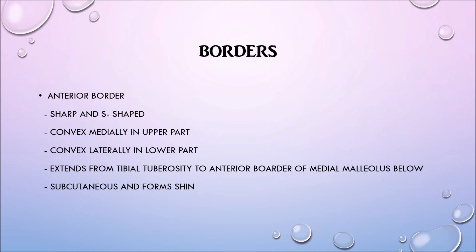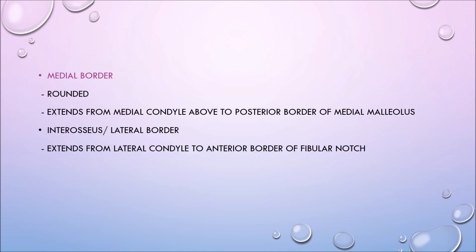Looking at the borders in detail: the anterior border is sharp and S-shaped. It is convex medially in the upper part and convex laterally in the lower part. It extends from the tibial tuberosity to the anterior border of the medial malleolus below, and is subcutaneous forming the shin. The medial border is rounded and extends from the medial condyle above to the posterior border of the medial malleolus below. The interosseous or lateral border extends from the lateral condyle to the anterior border of the fibular notch.